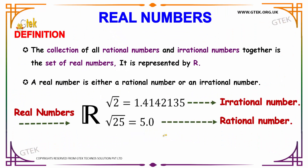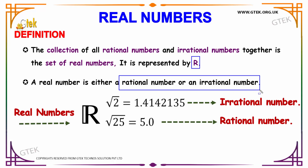The definition of real numbers: it is considered to be a collection of all rational numbers and irrational numbers. Together, it is considered to be the set of real numbers. The representation of a real number is denoted by the letter capital R. A real number is either a rational number or an irrational number.